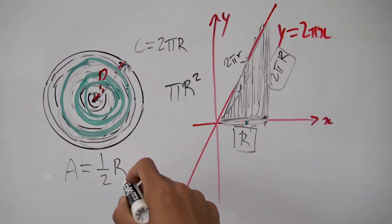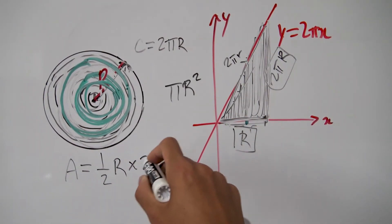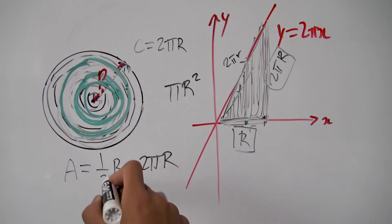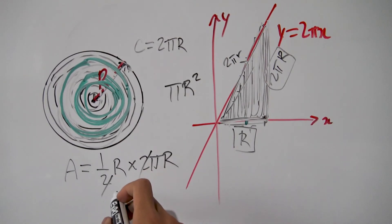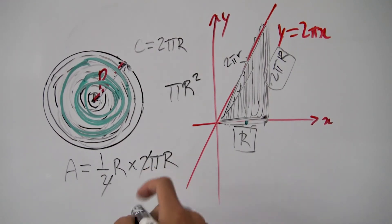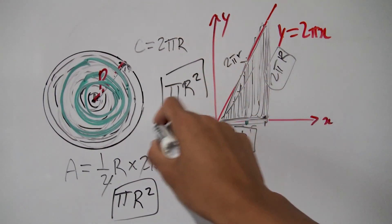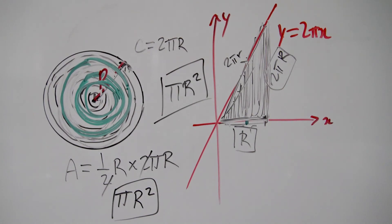So we have half times the base times the height. And notice that these twos will cancel and we have r times r which becomes r squared and we have this pi here. So in the end we get pi times r squared which is exactly the formula that we were expecting from the very start.